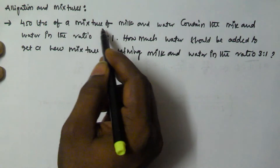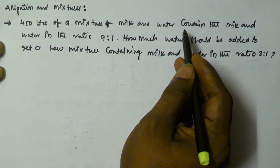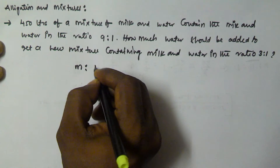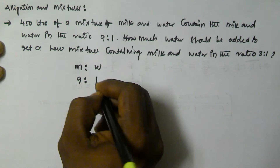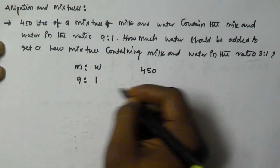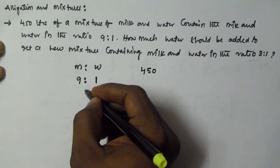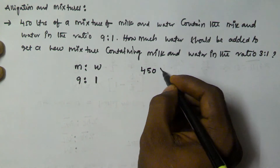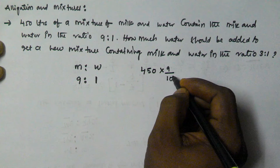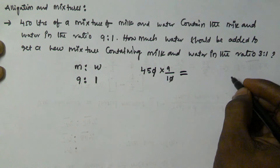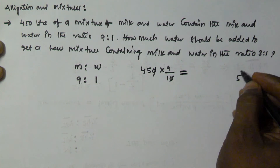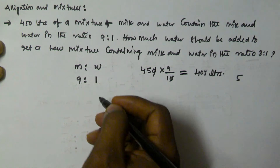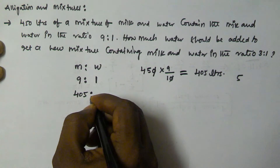There are 450 liters of mixture. The mixture contains milk and water in the ratio 9:1. The total quantity is 450. So milk is 9 parts out of 10 total parts. The milk ratio is 9/10, so 9/10 of 450 gives us 405 liters of milk.